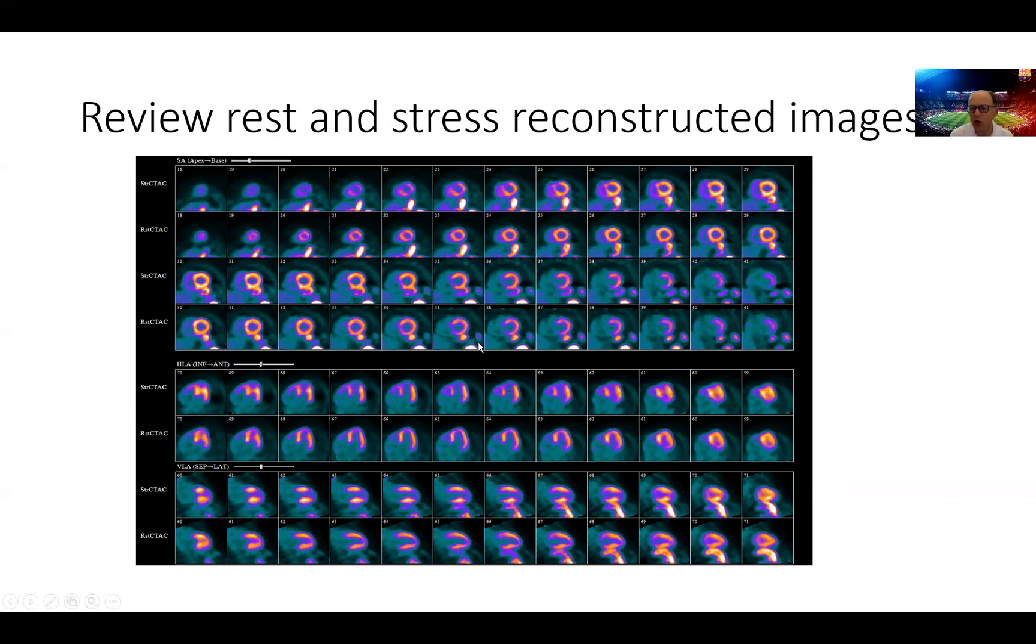And we go over the rest images first, where we can see displayed here, the short axis images of the left ventricle on the bottom, going from the apex to the base, with some GI activity here, but not interfering with the interpretation of the images.